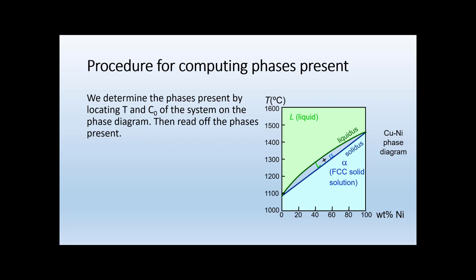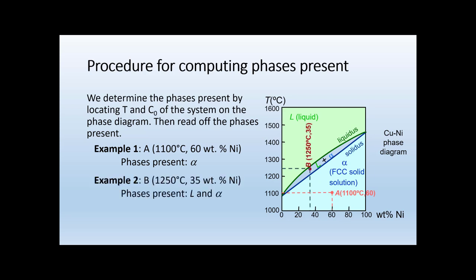Let's first talk about computing the phases present — that's very straightforward. We just locate the temperature and composition of the system, C₀, on the phase diagram and read off the phases present. For example, at point A — 1100°C and 60 weight percent nickel — we can see that alpha is our only phase present. In contrast, if we choose 1250°C at 35 weight percent nickel, then we have two phases present: liquid and alpha.